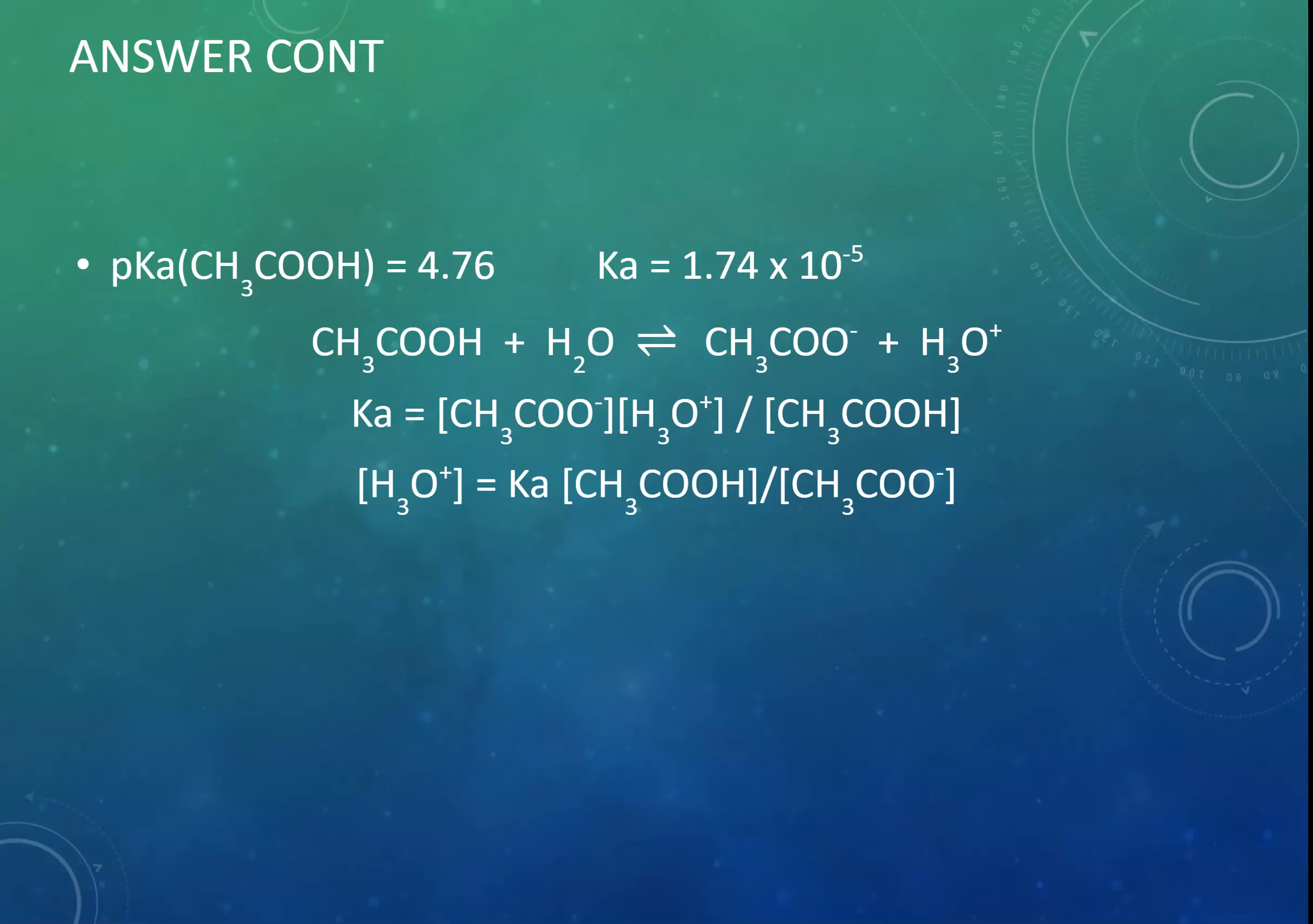So, we're going to rearrange it. Substitute our numbers in. Put everything into a calculator carefully and solve it. From our hydronium ion concentration, we can then calculate pH, which is 4.35.